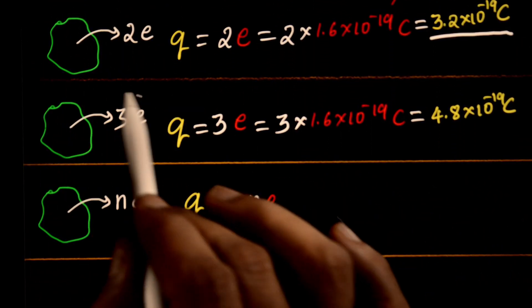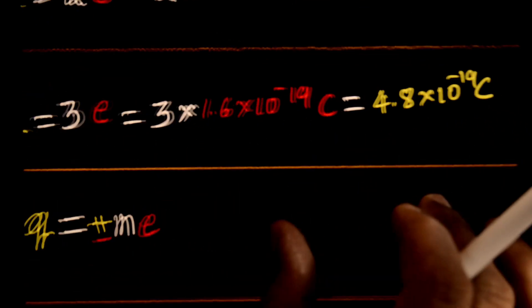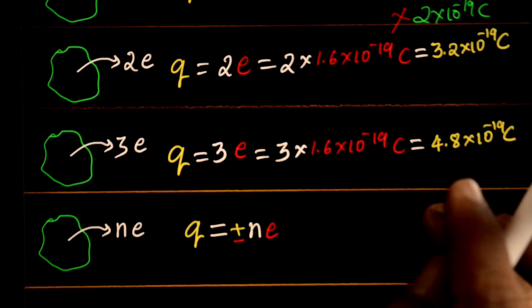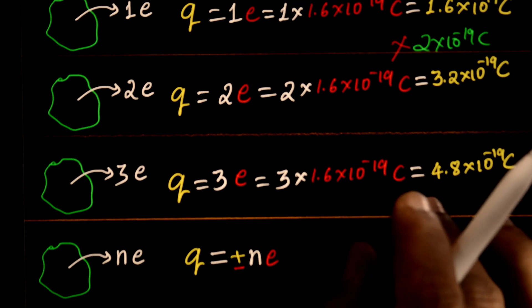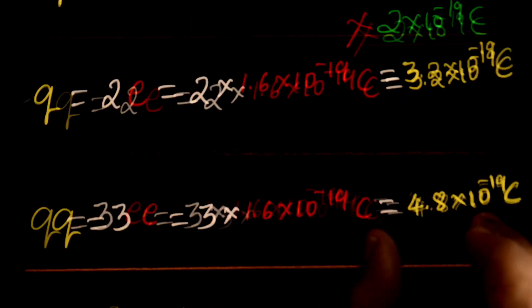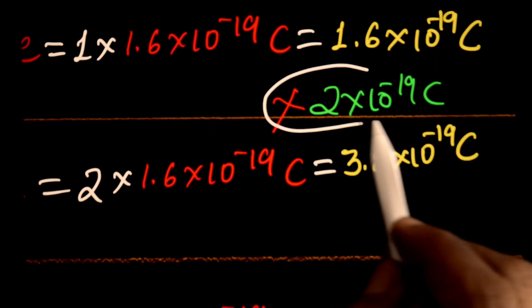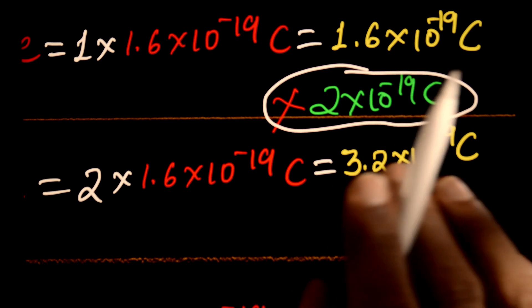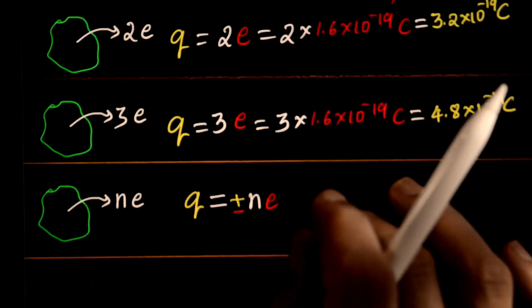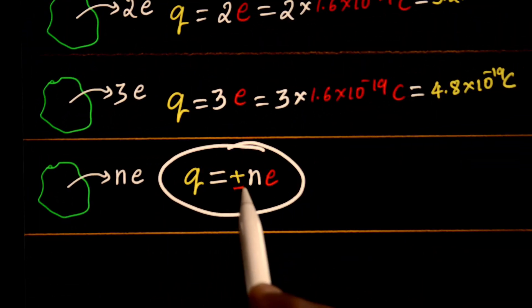If you remove 3 electrons, it becomes 4.8 × 10^-19 coulomb charge. Here you have only integral multiples of the charge on the electron. That is why you do not have any in-between charges. Like 2 × 10^-19 coulomb charge is not possible. Here we have only discrete values. We express this as Q = ±nE.